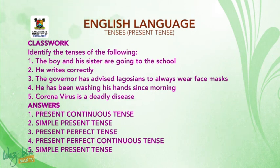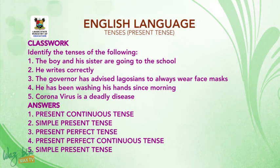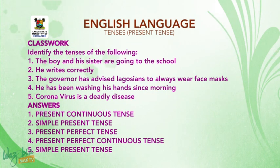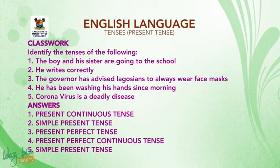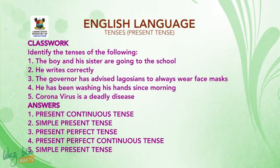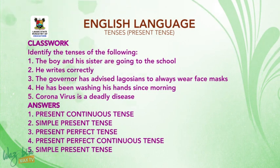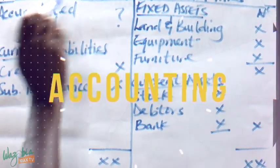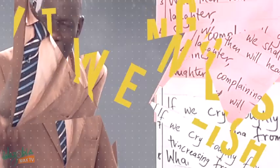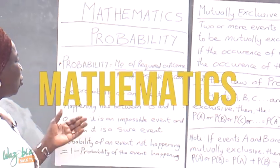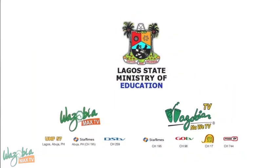Classwork sentences: 1. The boy and his sister are going to the school. 2. He writes correctly. 3. The governor has advised Lagosians to always wear face masks. 4. He has been washing his hands since morning. 5. Coronavirus is a deadly disease. This is the end of the lesson.